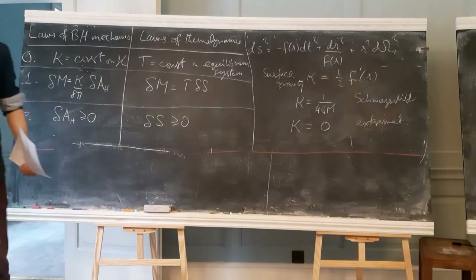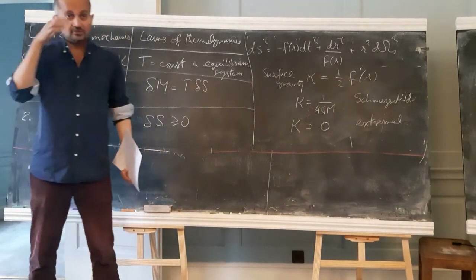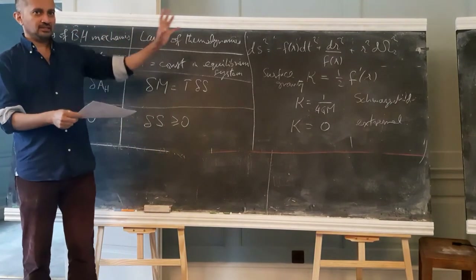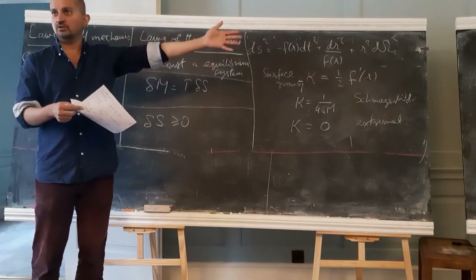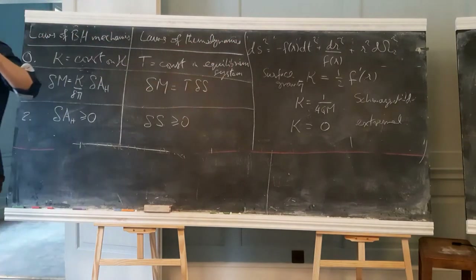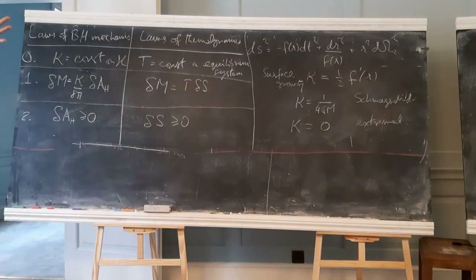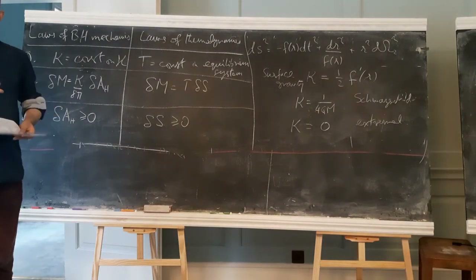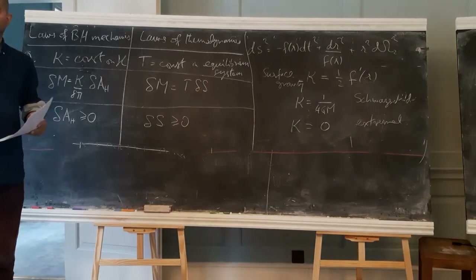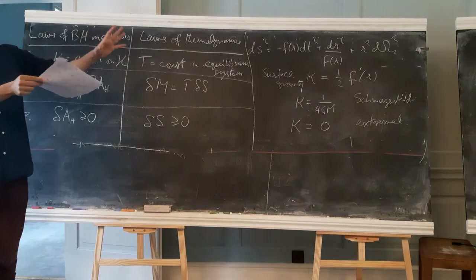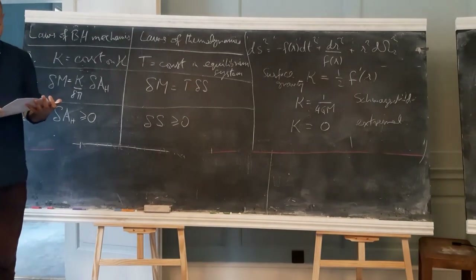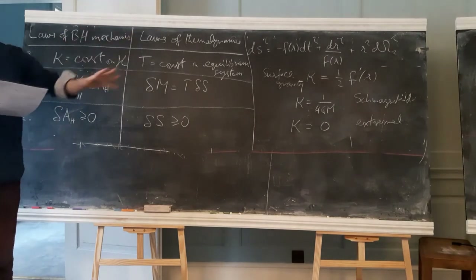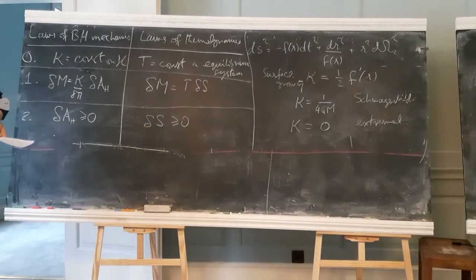The Euclidean derivation is a quick way to get the temperature, and it works beautifully, though somewhat magically. It was begun by Gibbons and Hawking. It's very simple to do but the physics is less clear than Hawking's original calculation. The key idea: the only thing missing in the discussion so far was the temperature; once you have the temperature, everything else follows from integrating the first law.